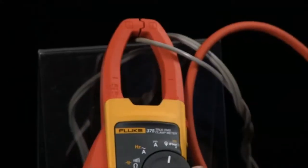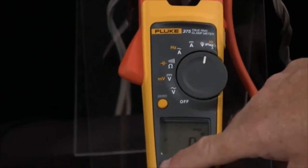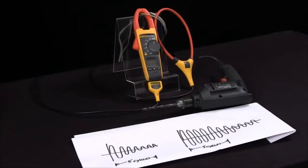To use inrush with iFlex, we simply turn it to the iFlex mode instead of the normal current mode, hit the inrush mode, and now we can capture inrush.